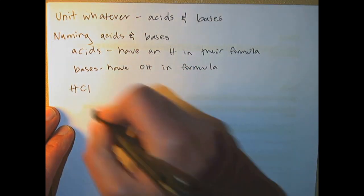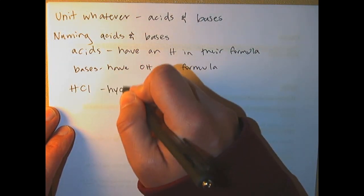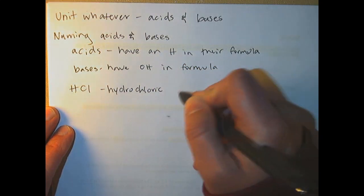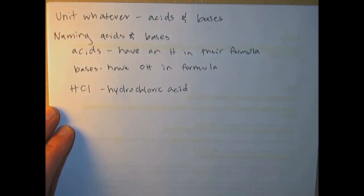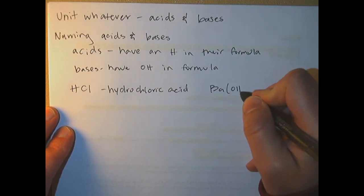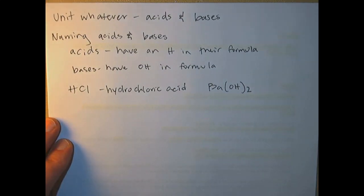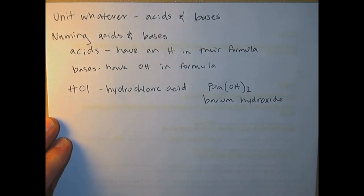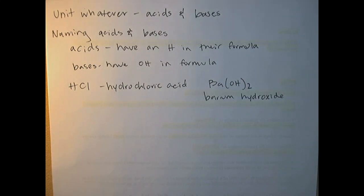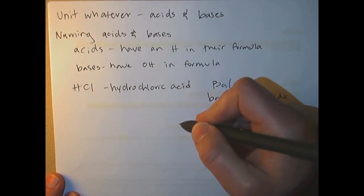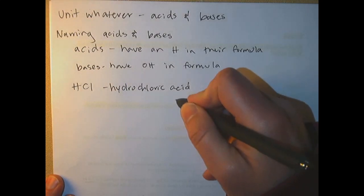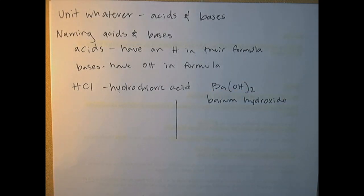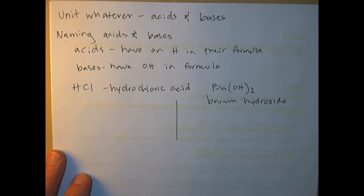As an example, maybe you've heard of HCl — we call that hydrochloric acid. And here's a base: it's called barium hydroxide. So those are examples of acids and bases. For naming, there are some rules. Maybe you still have the blue sheet from first semester. There are basically a couple of rules to name acids and bases.